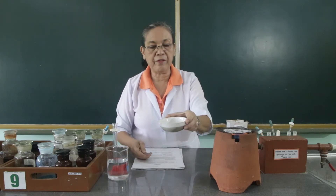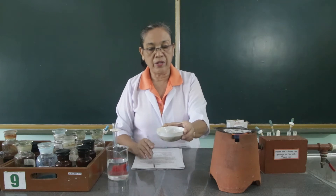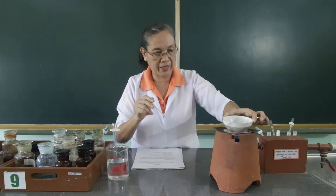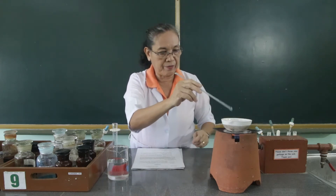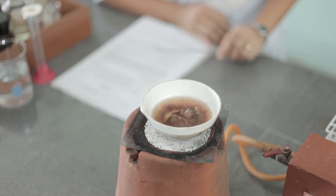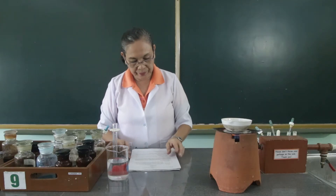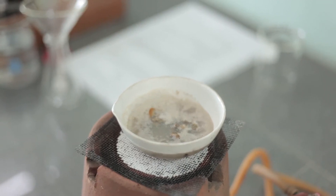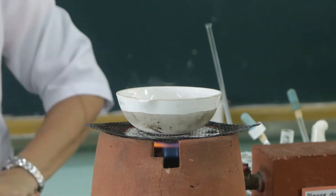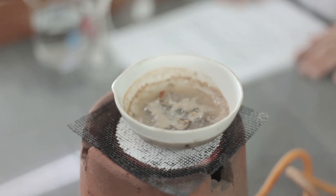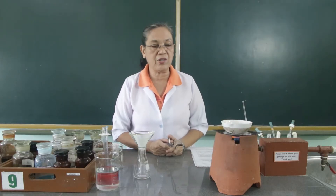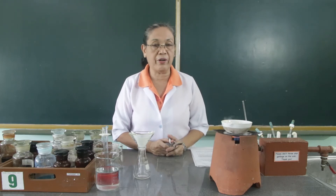So I have already added 40 ml of water into the ground shellfish meat. We have already boiled the meat of the seashells with water for 20 minutes, then the next step is we are going to filter this.